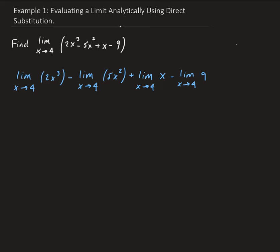From the first one, we have limit of 2x cubed as x approaches 4, so we can take out the 2. That will leave us with 2 times the limit of x cubed as x approaches 4. And on the second one, we can take out the 5, so we have minus 5 times the limit as x approaches 4 of x squared.